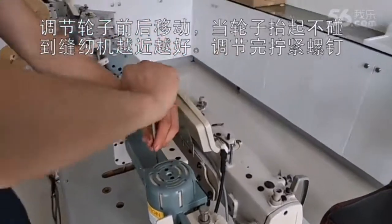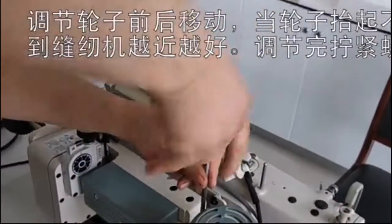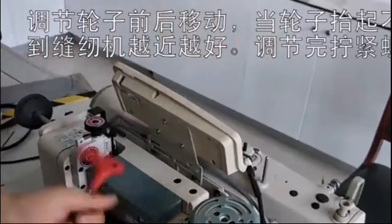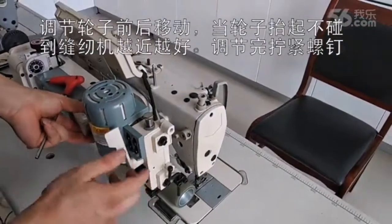Move the puller to the front and to the back side, then try to lift up the puller, but the puller cannot touch the machine.